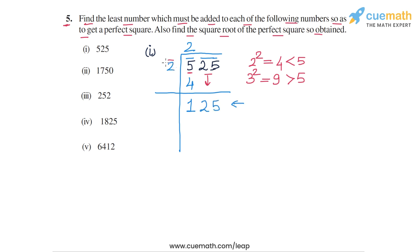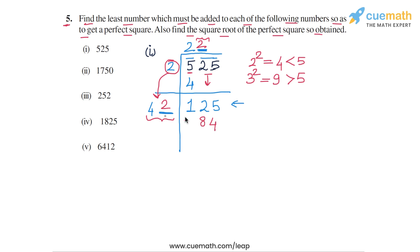For the divisor of the next step, we take the divisor 2 and double it to get 4. We find the largest possible digit to place next to 4 and also as the second digit in the quotient, such that the product is less than or equal to 125. That digit is 2, because 42 × 2 = 84. If we had taken 3, then 43 × 3 would exceed 125. Subtracting gives a remainder of 41. There are no more digits left, so the division stops. We have a quotient of 22 and a remainder of 41.